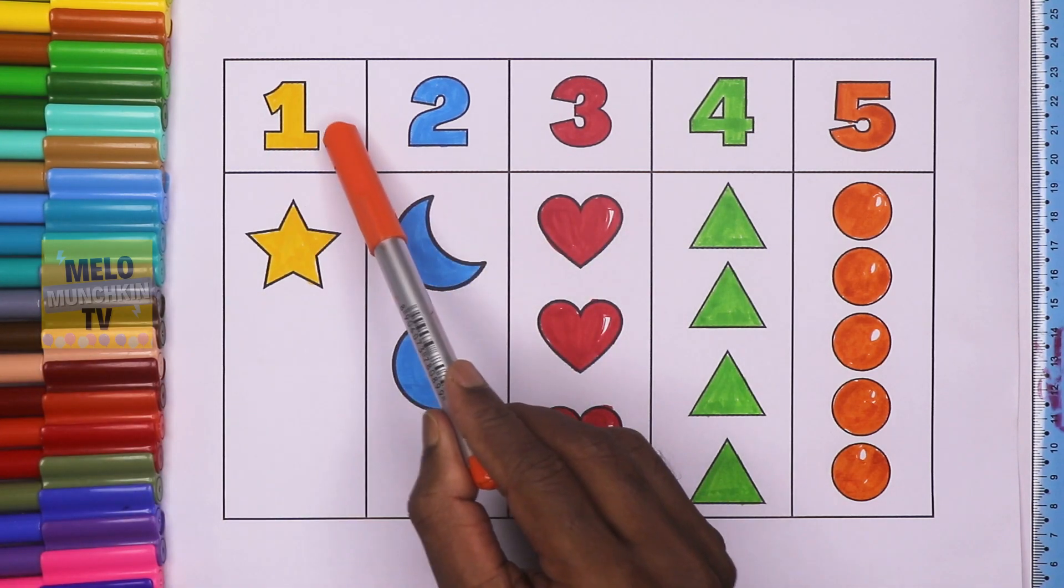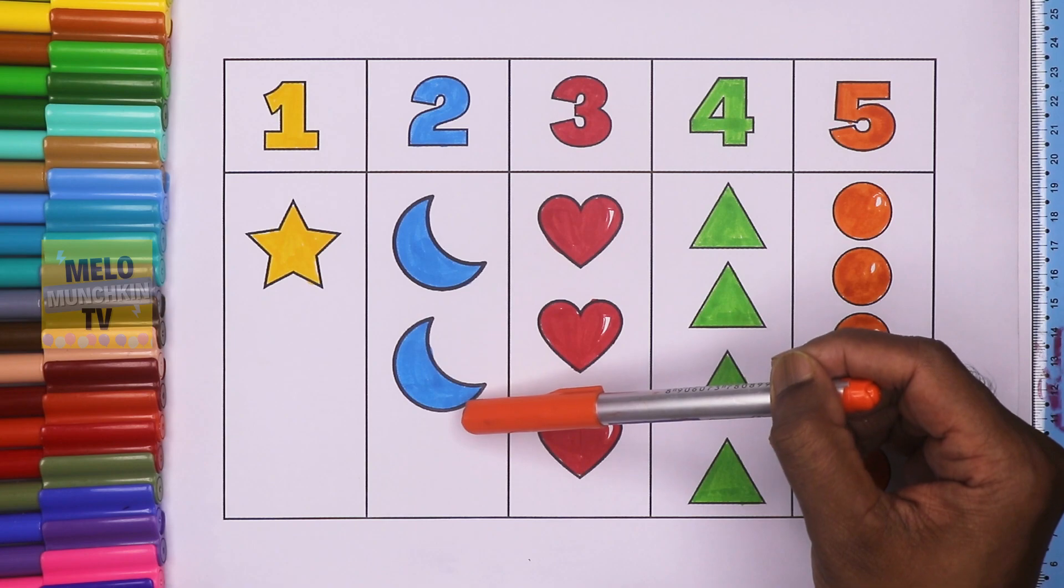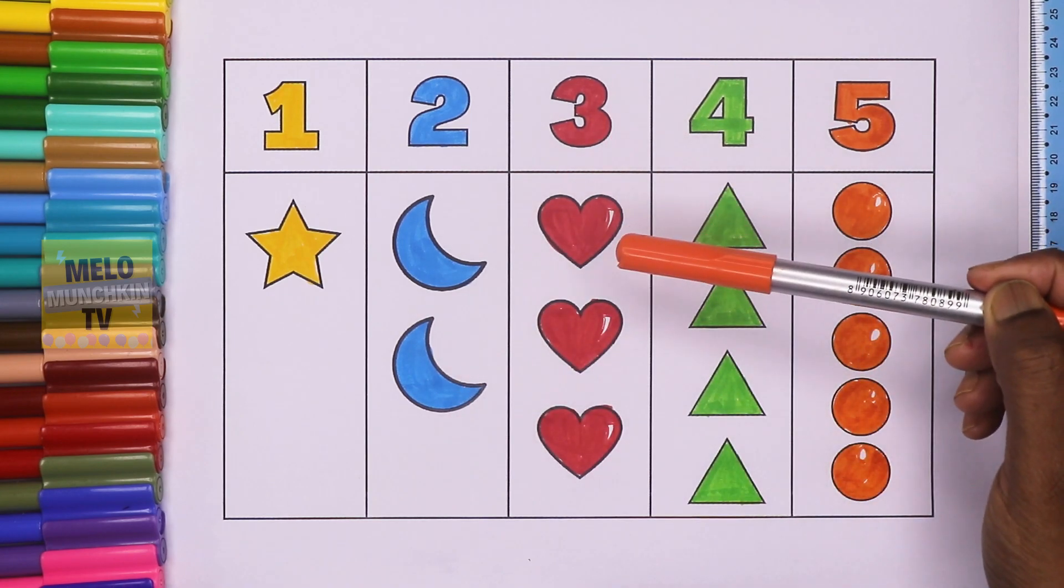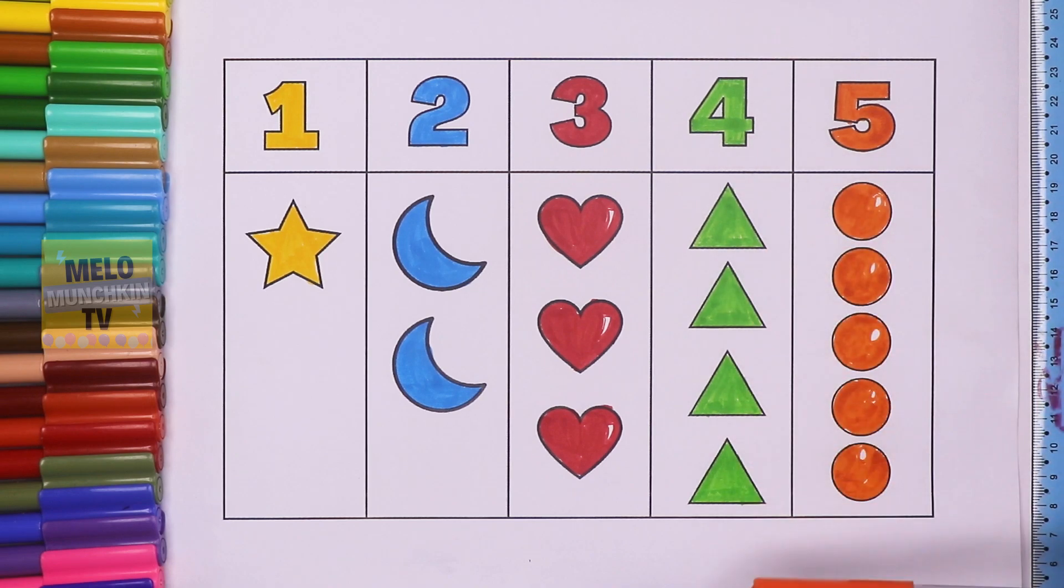1 star, 2 crescent, 3 hearts, 4 triangles, 5 circles.